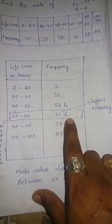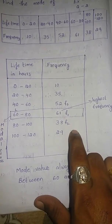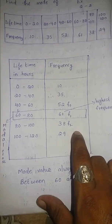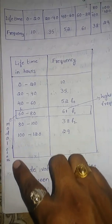Note it down as F1. Above the highest frequency is F0, below the highest frequency is F2. Highest frequency related class is a modal class.